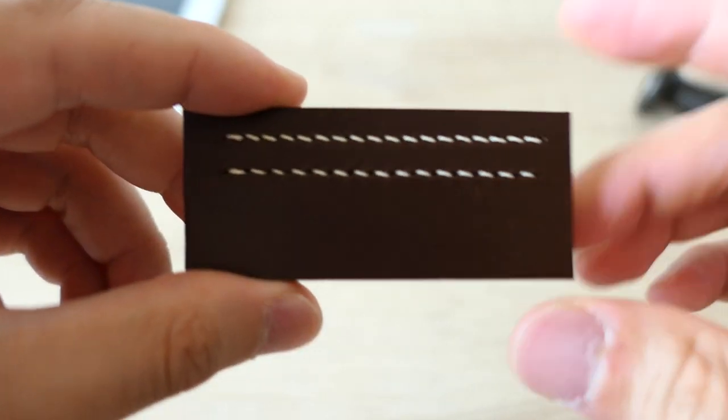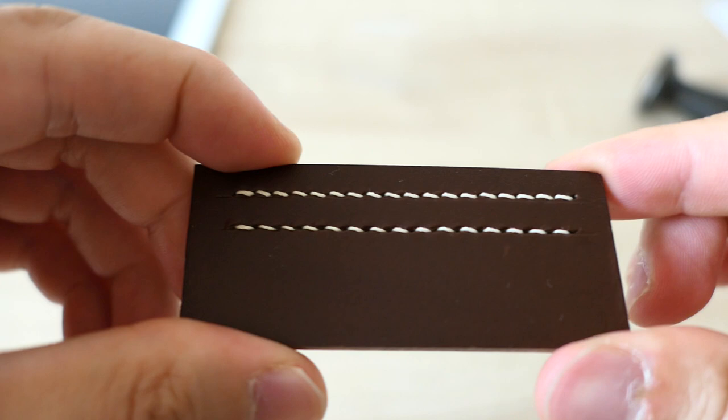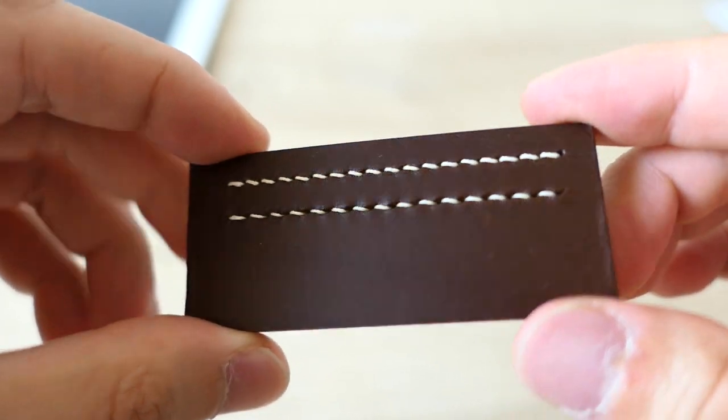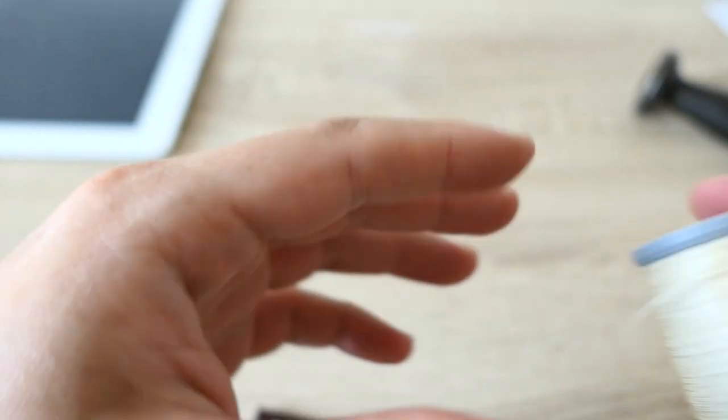So you do get a more refined look to it, to your holes and your threads. And this was on vegetable tanned leather. I highly recommend this thread.